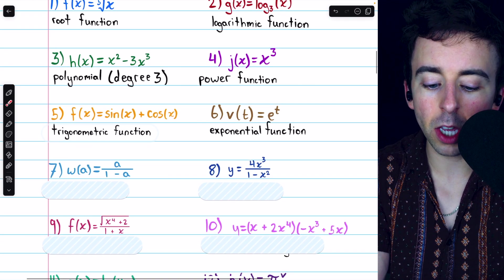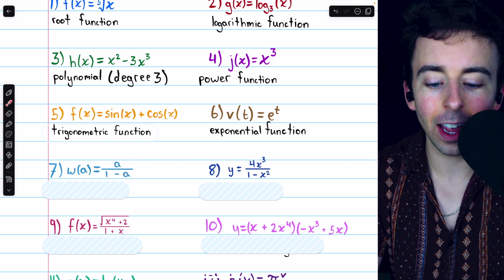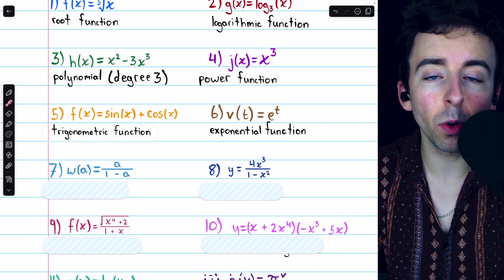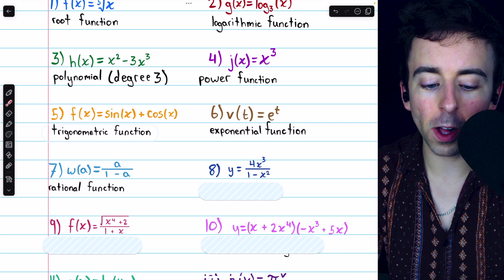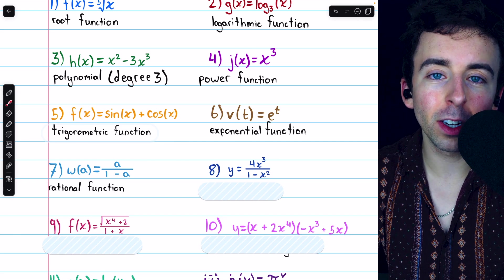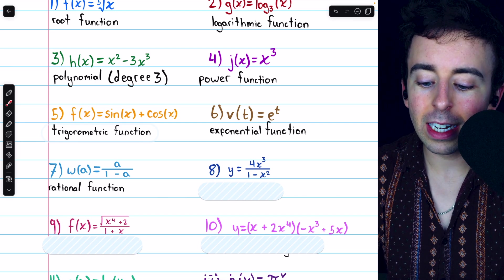Number seven, getting some weird names now, w of a equals a divided by one minus a. A is a polynomial. One minus a is also a polynomial. Since this then is a ratio of polynomials, it's called a rational function. It's also an algebraic function, but more specifically, it is a rational function.